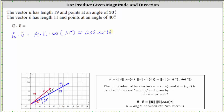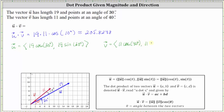Now let's determine the dot product by writing the two vectors in component form, then determine the sum of the products of the x and y components. For vector u, the x component is equal to the magnitude of vector u times cosine theta, where theta is the direction of the vector. Therefore, the x component is 19 times cosine 30 degrees, and the y component is 19 times sine 30 degrees. For vector v, with magnitude 11 and direction 40 degrees, the x component is 11 times cosine 40 degrees, and the y component is 11 times sine 40 degrees.